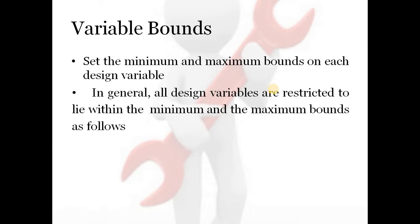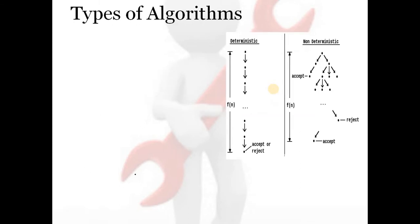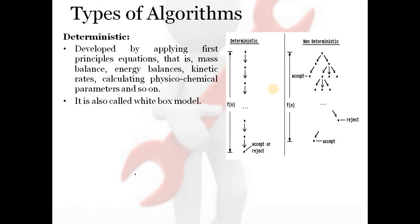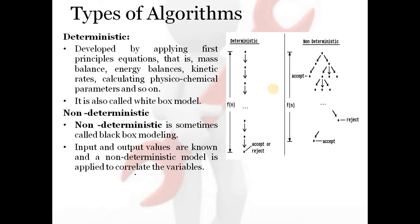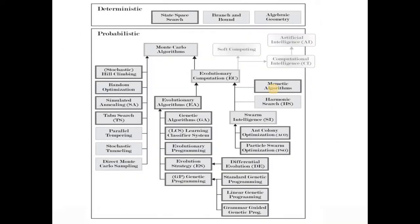Next is variable bounds. Setting the minimum and maximum on each design variable is called fixing the variable bounds. Regarding types of algorithms, in general there are two types: deterministic algorithms, which use first-principle equations, and non-deterministic algorithms, which do not use principle equations and are known as black-box modeling. In non-deterministic modeling, input and output values are known and modeling is done in a non-deterministic way. Some techniques under each category, deterministic and probabilistic, are listed here.